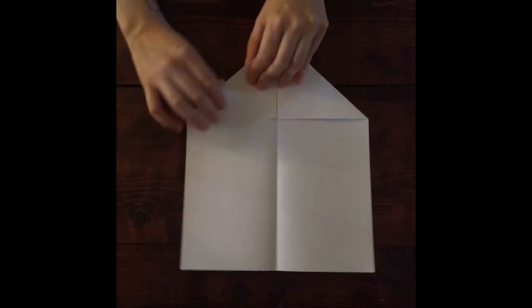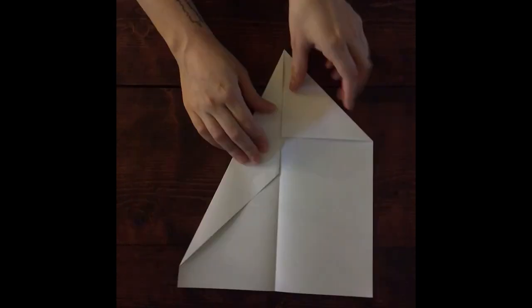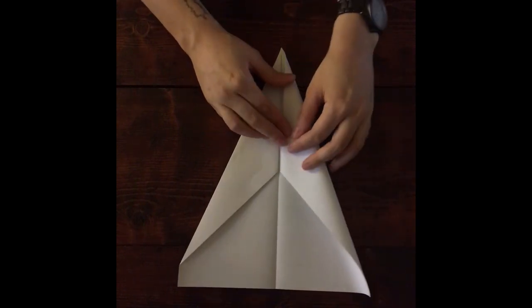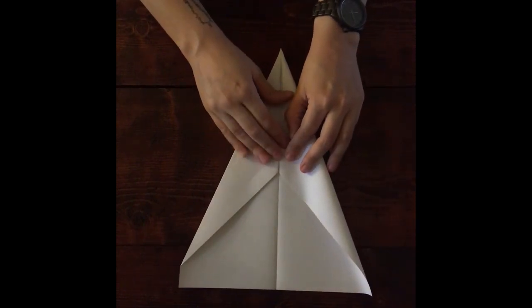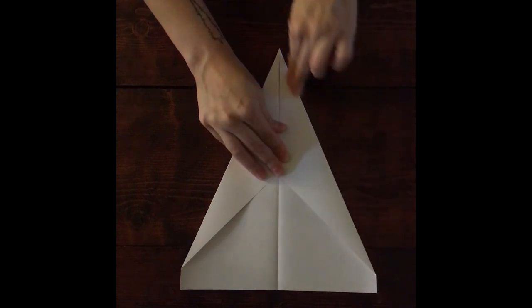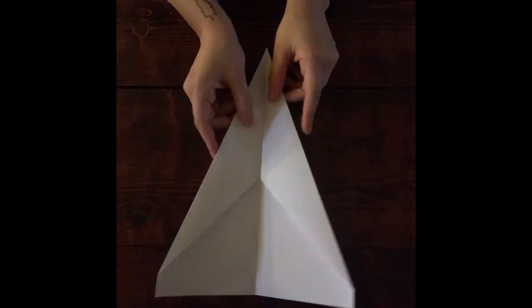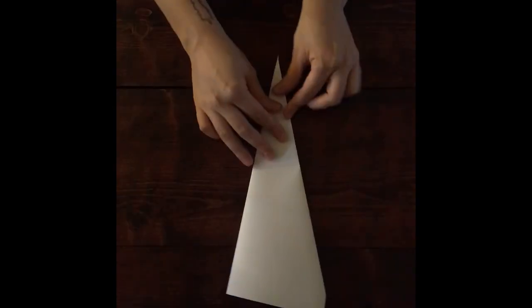The next step is to fold both of the angled edges to the middle, making sure they meet at the center crease. Then you're going to fold the whole thing in half on the crease in the middle we've already made.